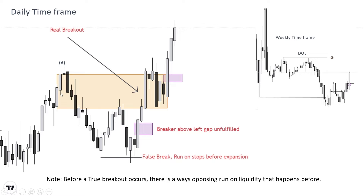These up candles here are a bearish order block before it got flipped into a breaker. When our bias is up, all the bearish PDRs in between are just like speed breakers. Price reacted from these bearish PDRs and swept the lows, then the swing high got truly broken. These bearish PDRs turned out to be a breaker.